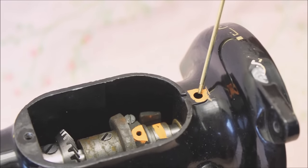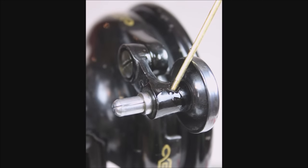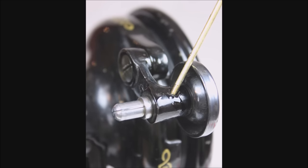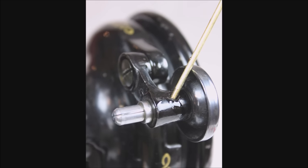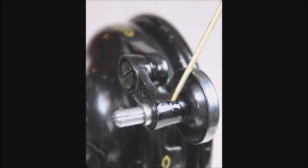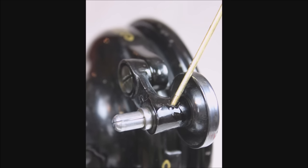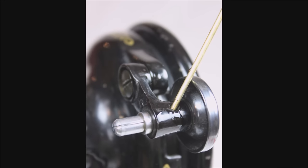And this next one is for the bobbin winder. Now the manual does show two oiling points for the bobbin winder. However, I prefer to not do the one because I want the bobbin winder to be somewhat stiff so that the pressure is held down on the belt. That's why I only prefer to do the one where it's spinning, not the arm itself.